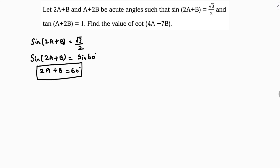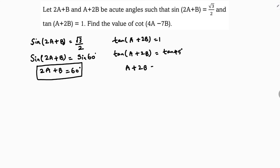Now, tan(a+2b) = 1. Since tan(45°) = 1, we get tan(a+2b) = tan(45°). So a+2b = 45°. This is our second equation.